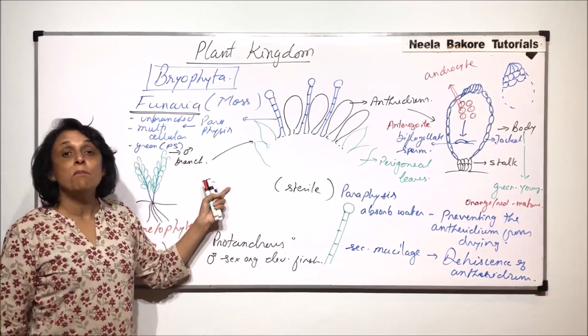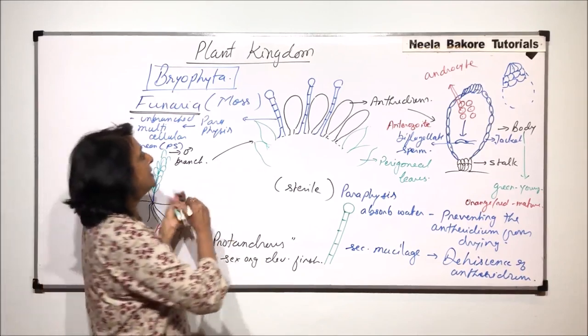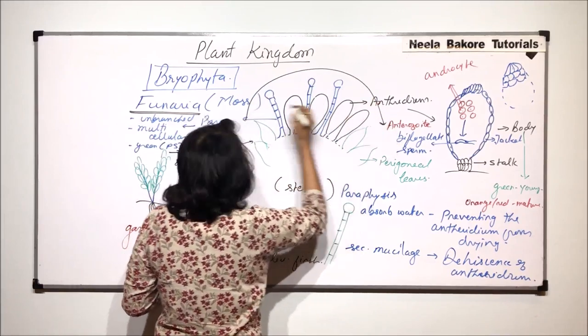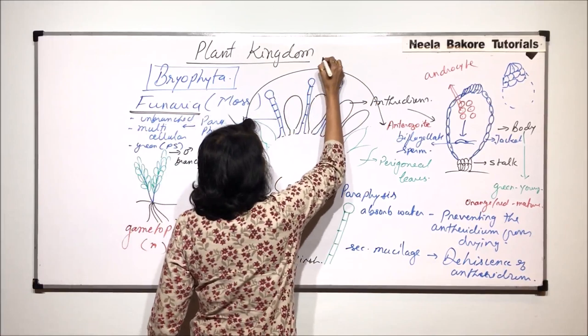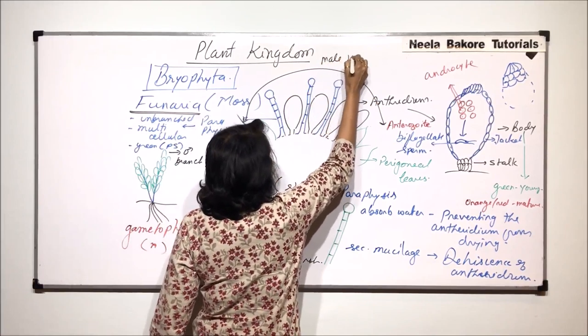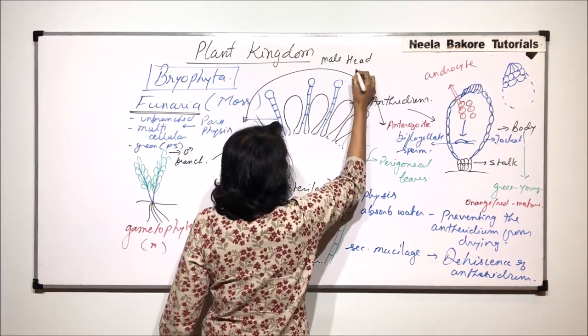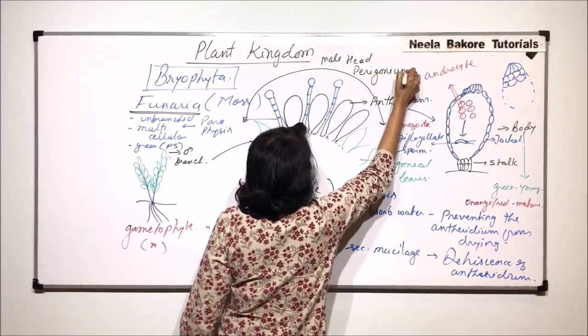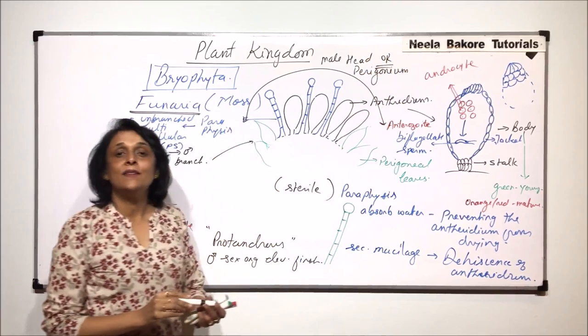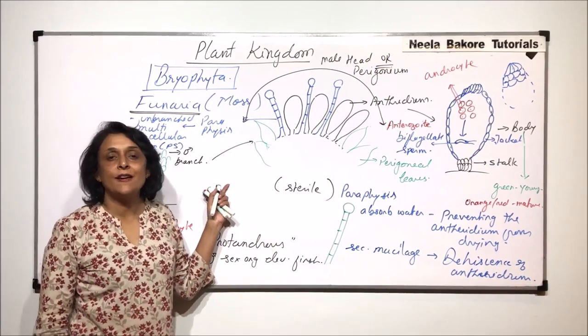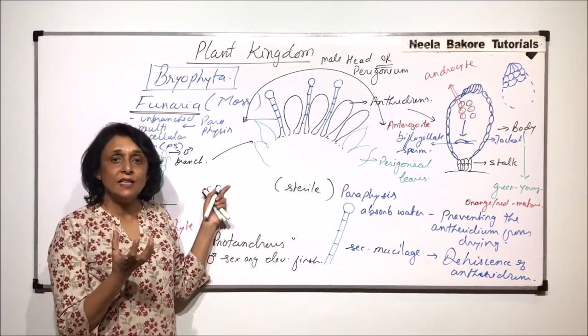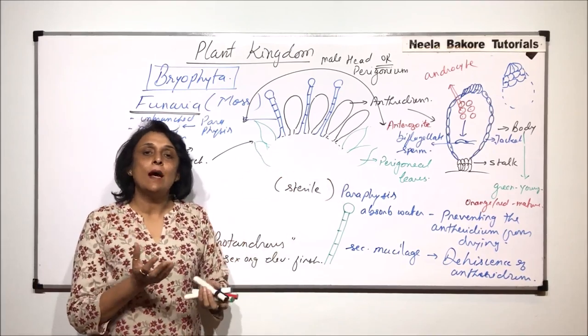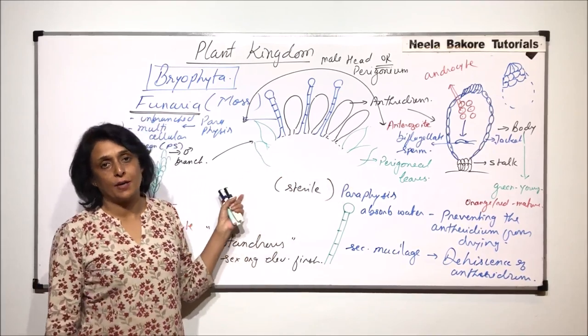This is the male head. This complete structure which is visible to us is known as the male head, or it is also known as perigonium. There are many antheridia, many paraphysis. They are all compactly arranged, and these perigoneal leaves basically surround the entire structure for protection.